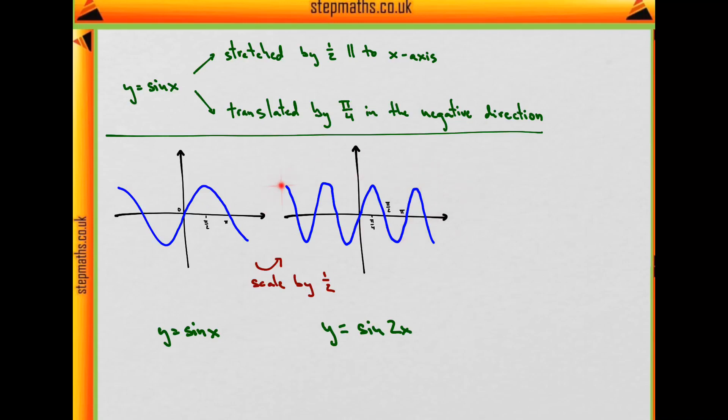So when I squeezed my graph, then it goes up and down faster, the frequency has increased, and that's why my equation now is y equals sine of 2x, rather than 1/2 x, which might have been a common mistake in this question.